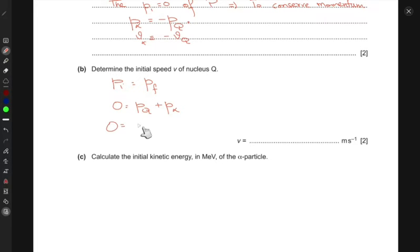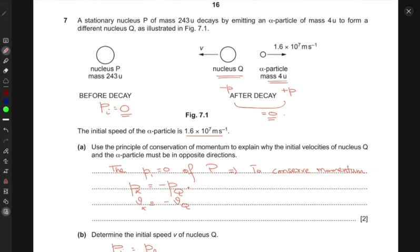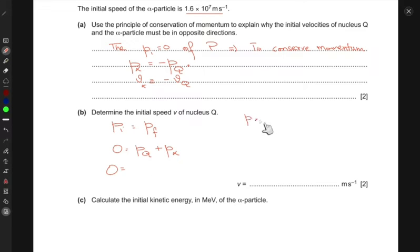Zero equals the momentum of Q, which has mass equal to the total mass minus the mass of the alpha particle. The momentum P = M × V, so this would be (243 - 4)u multiplied by the velocity V of nucleus Q, which is what we want to find.